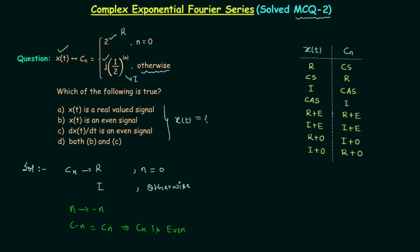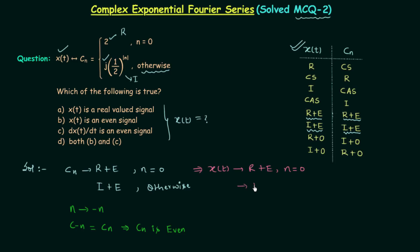So we have everything to find the nature of signal XT. CN is real and even when n equals 0, and CN is imaginary and even when n is not equal to 0. From the XT-CN pairs, when CN is real and even, XT is also real and even; when CN is imaginary and even, XT is also imaginary and even. So XT is real and even when n equals 0, and imaginary and even otherwise.